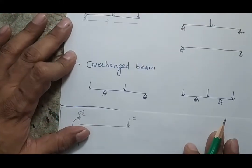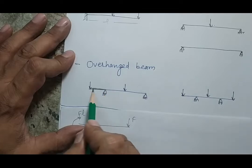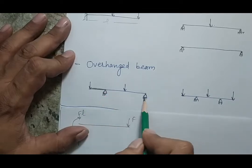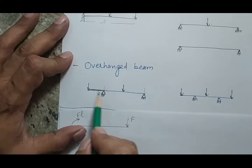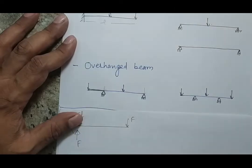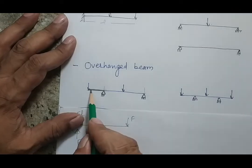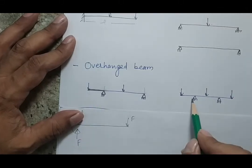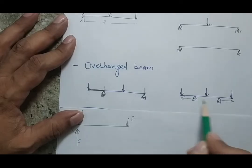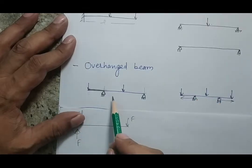The third type of beam is an overhanging beam, which is basically a combination of a simply supported and a cantilever beam. One portion represents a simply supported section and the remaining part represents a cantilever section. In civil engineering we find this structure very frequently — for example, a balcony protruding outside a building. Here I am also showing a double overhanging beam, with overhangs on both sides.